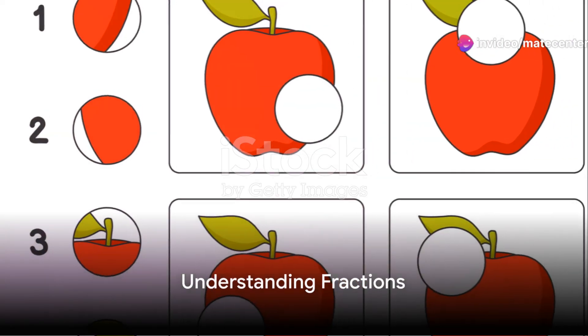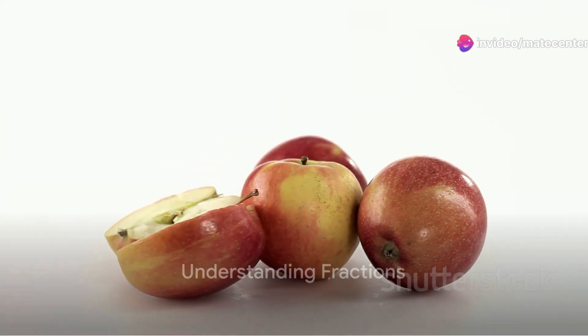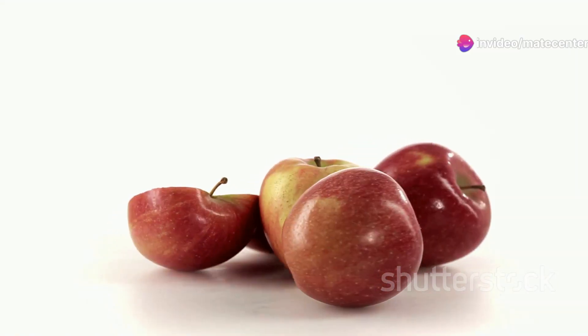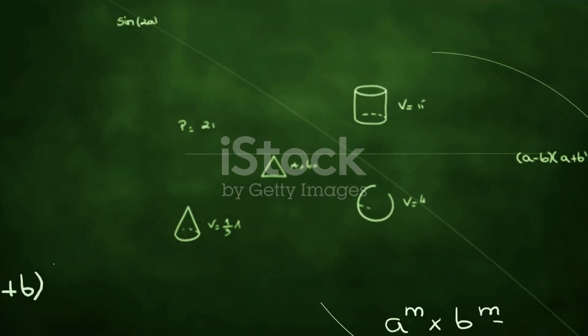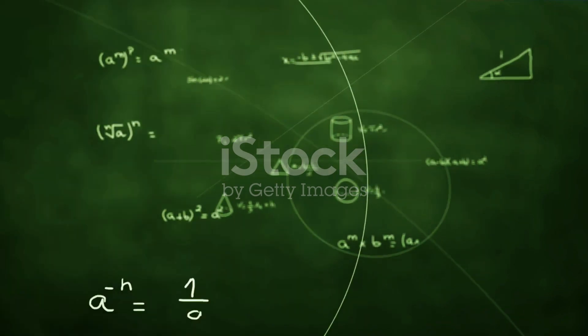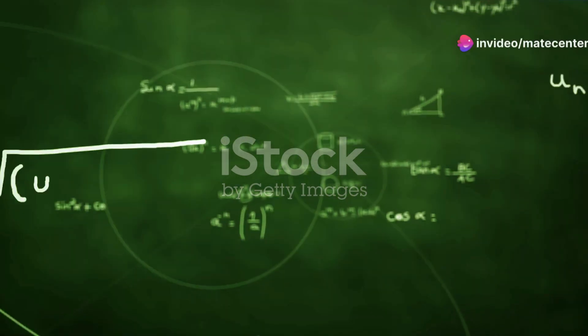So what exactly is a fraction? Imagine a whole apple. Now divide that apple into four equal parts. Each of those parts represents a fraction of the whole apple. In mathematical terms, we'd represent each part as one-fourth, or in symbols, 1/4.